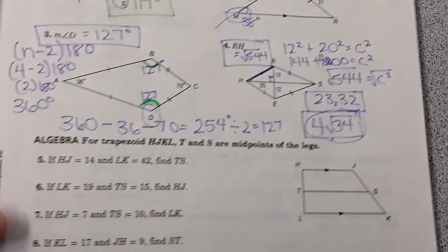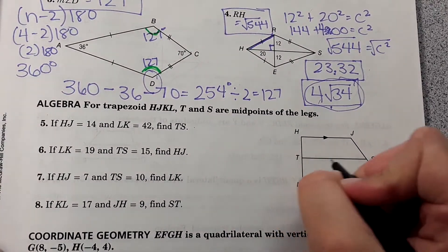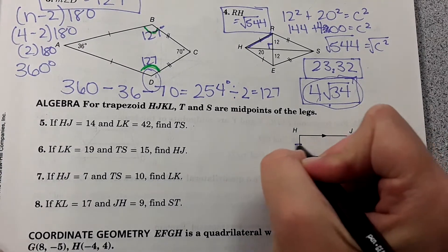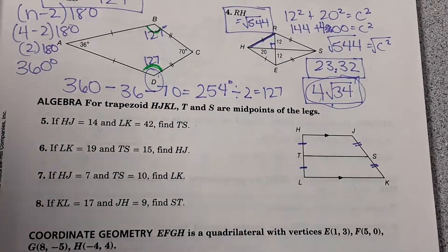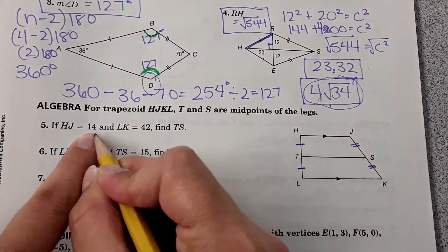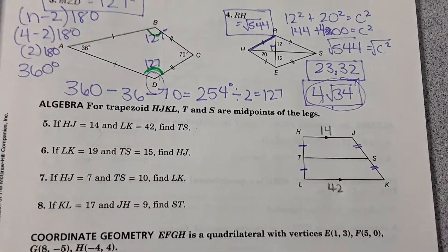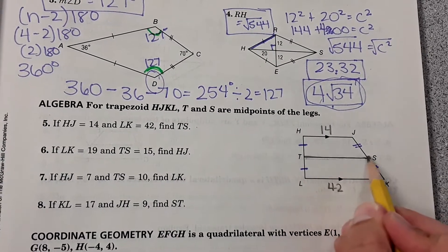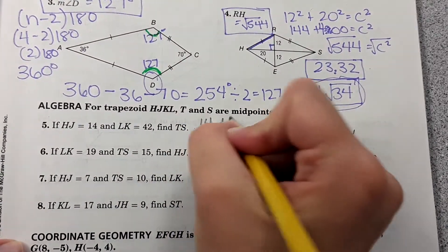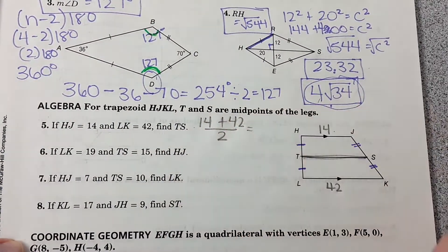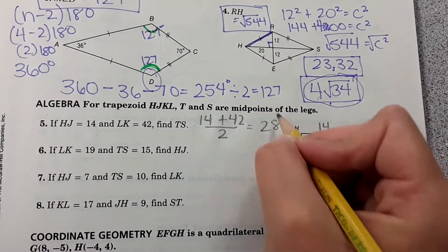Then here trapezoid HJKL, T and S are the midpoint of the legs. So this is a midsegment here. HJ is 14, LK is 42. Find the length of TS. This midsegment is the average of these two lengths. So the way you'd solve for it is 14 plus 42 divided by 2 and when you solve for that you get 28. So the answer for the length of TS is 28.